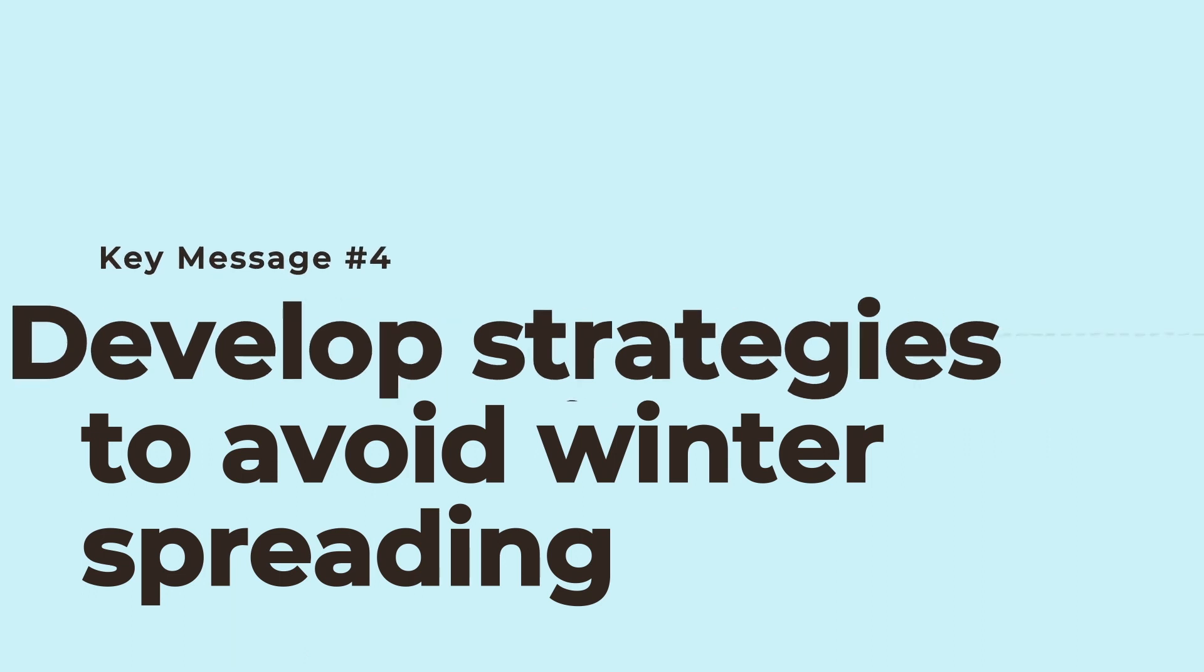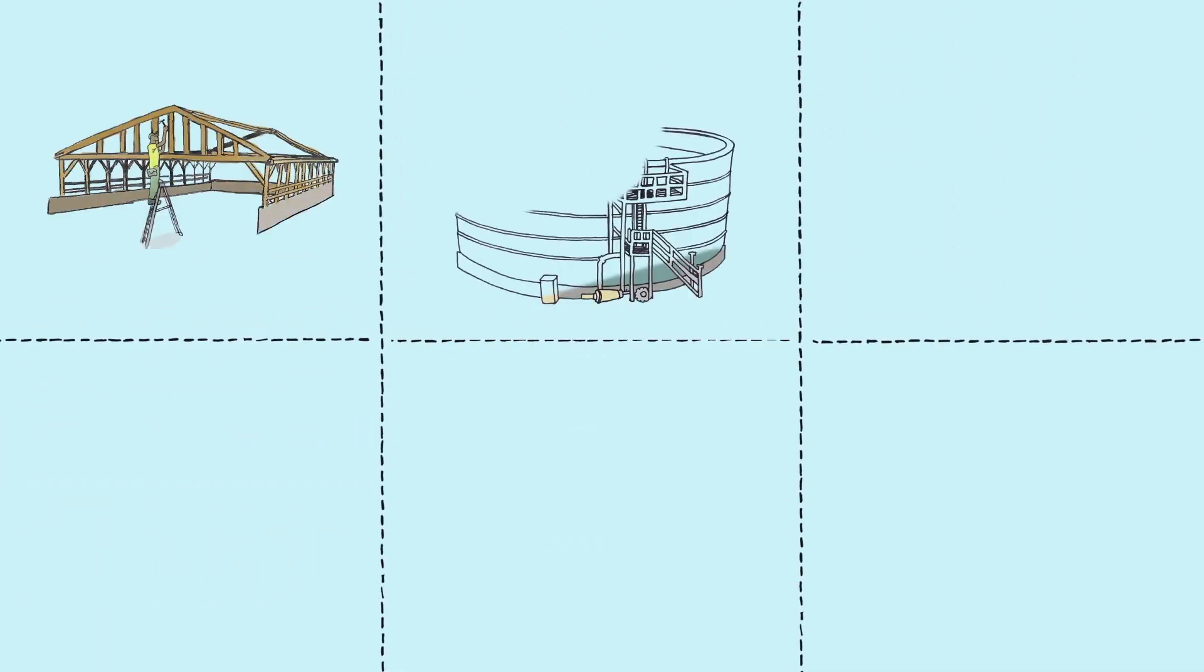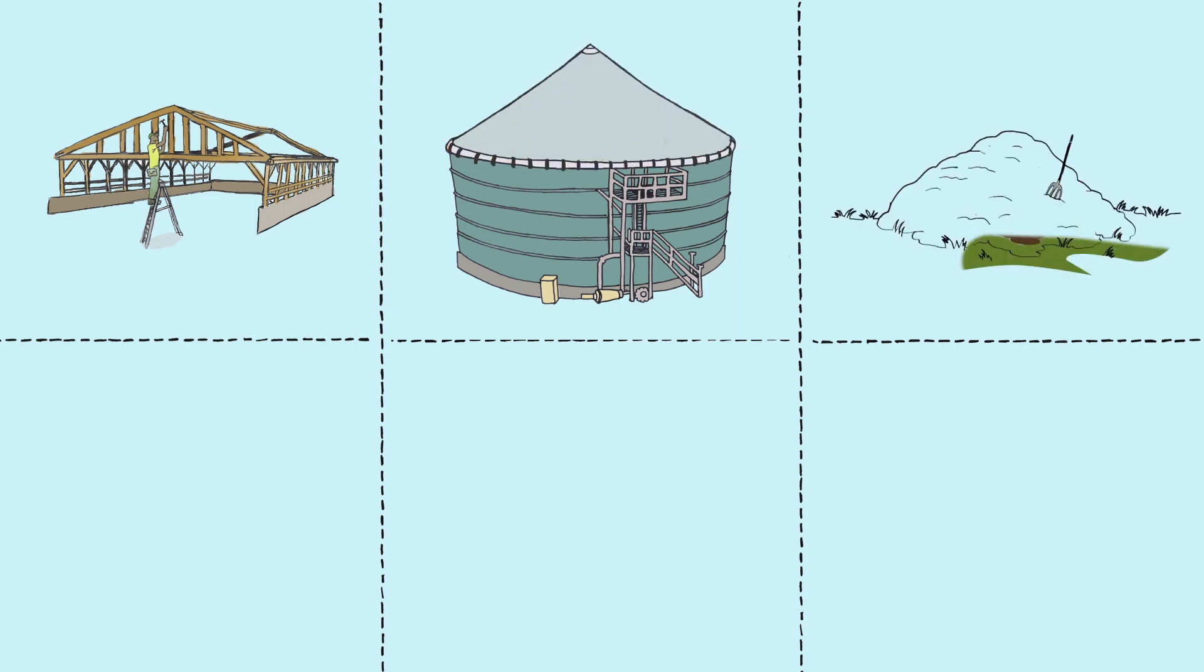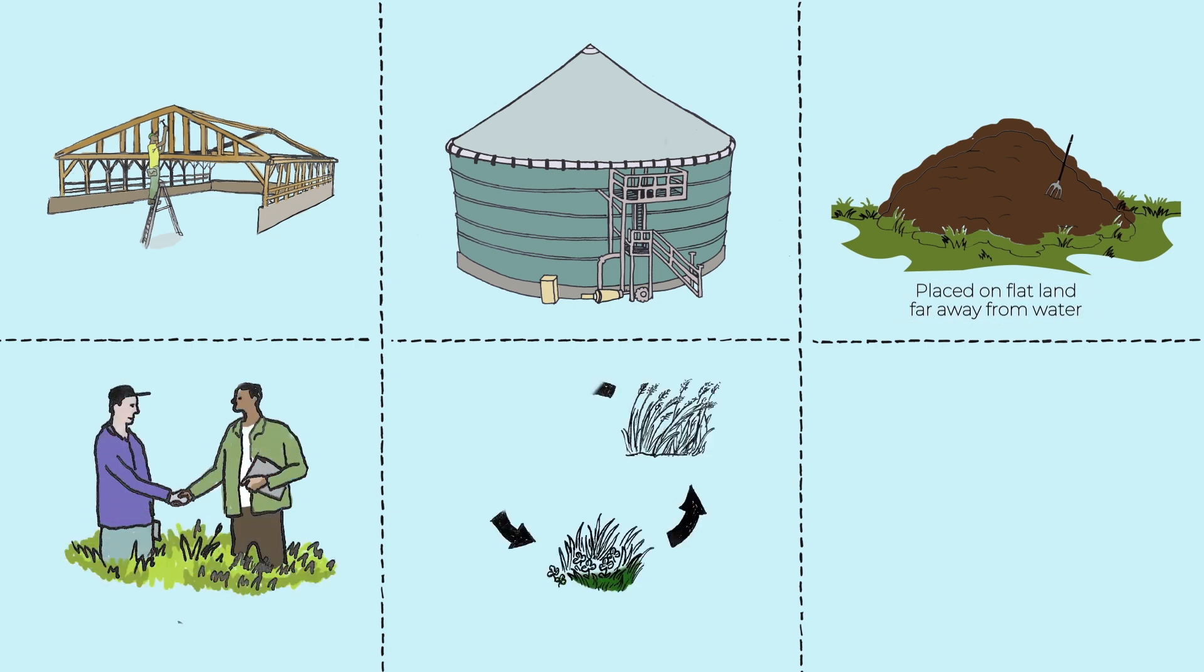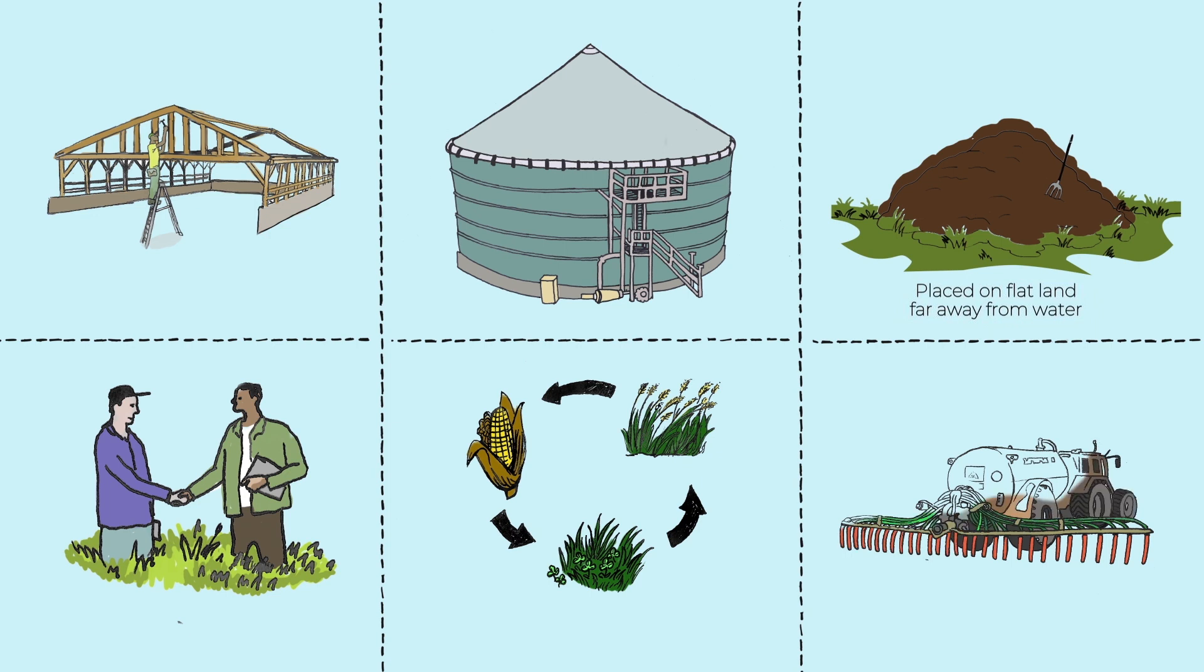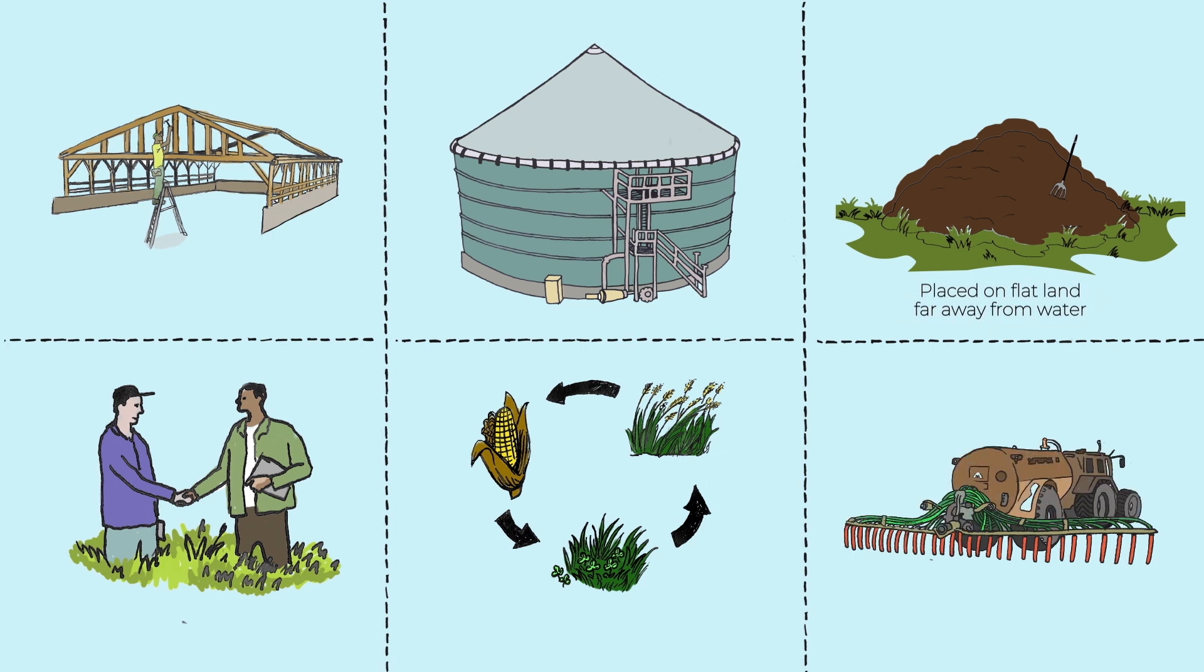Strategies to avoid the need to winter spread include building adequate manure storage capacity, roofing an existing storage to exclude rainwater, using temporary infield storage, selling to a nearby farmer, diversifying crop rotations to provide application windows, and investing in equipment that allows for application during the growing season.